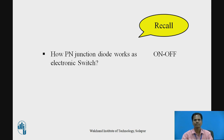Students should pause the video here and recall how a PN junction diode works as an electronic switch. When the anode of the diode is at higher potential with respect to the cathode, by minimum voltage of barrier potential, the diode conducts, acts as a short circuit from anode to cathode, and operates as an ON switch. When voltage at the anode is lower than the voltage at the cathode, the diode does not conduct, acts as an open circuit from anode to cathode, and operates as an OFF switch.